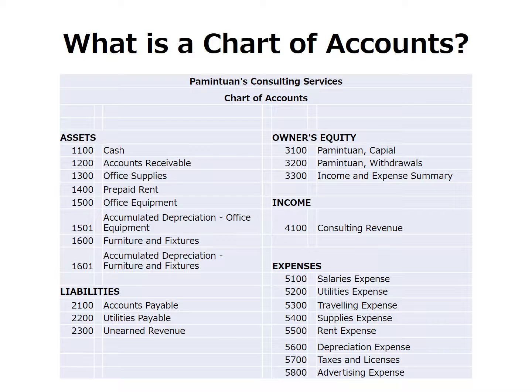Take a look at the account number — do you notice anything? Yes, there's a numbering convention followed in this chart of accounts. For assets, the account number starts with 1; liabilities, 2; owner's equity, 3; income, 4; and expenses, 5. The numbering pattern may be different for a merchandising or a manufacturing business. The important thing to remember is that accounts listed in each category should start with the same number.